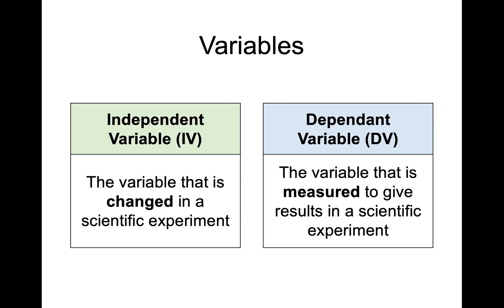Hello everyone and welcome back to the National 5 Biology. Today we're going to be taking a look at scientific literacy and in particular the concept of validity. In any experiment that we do we first of all need to think about the independent variable, or the IV, and this is the variable that is changed in a scientific experiment. You should be able to pick out what has been changed in each experiment and we'll have a look at the impact of that as well.